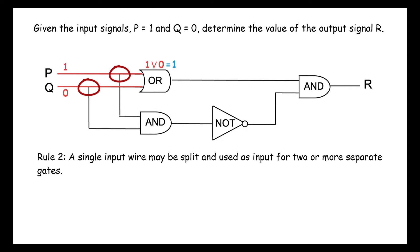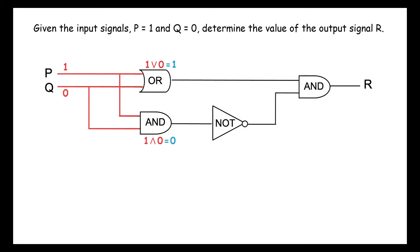So the split from p's input wire takes us to the first AND gate, and p inputs 1 into this gate as well. Likewise, q inputs 0 into the first AND gate. So for the first AND gate, we have 1 and 0 equals 0.